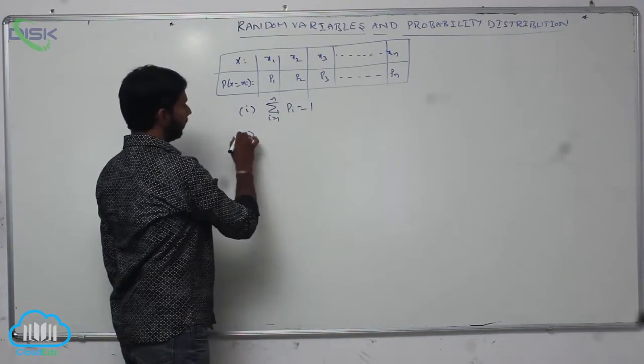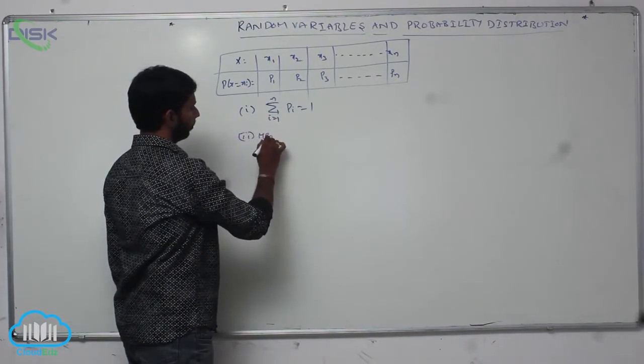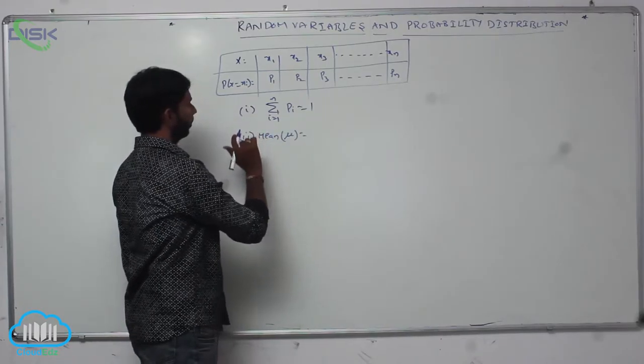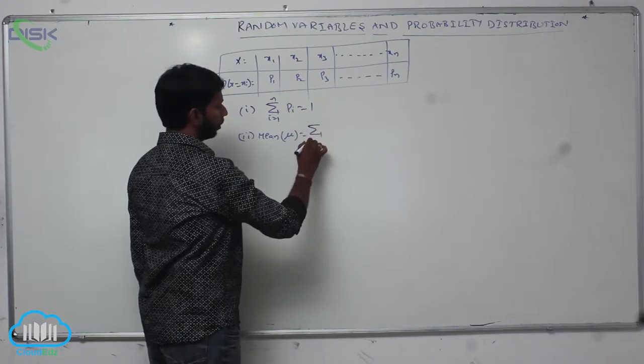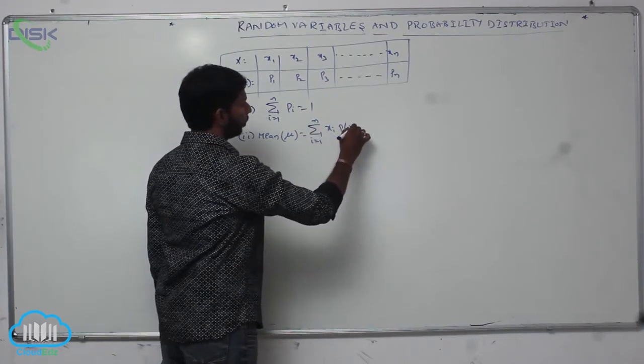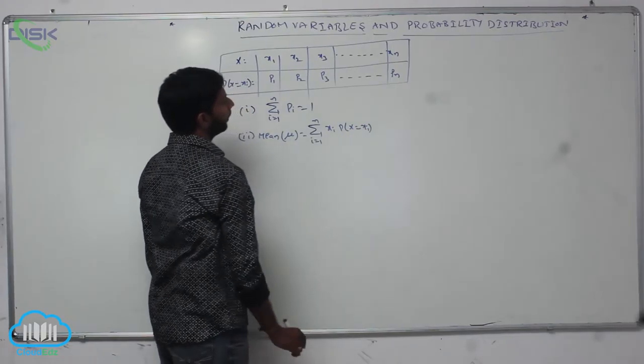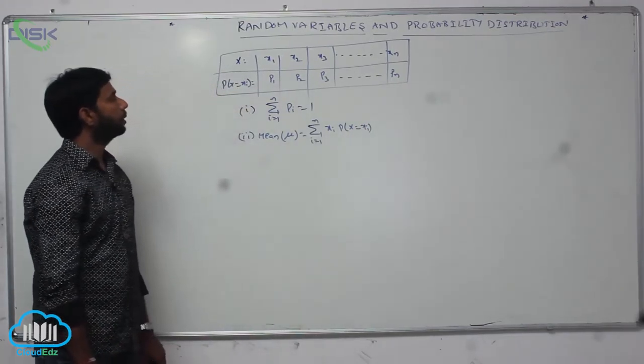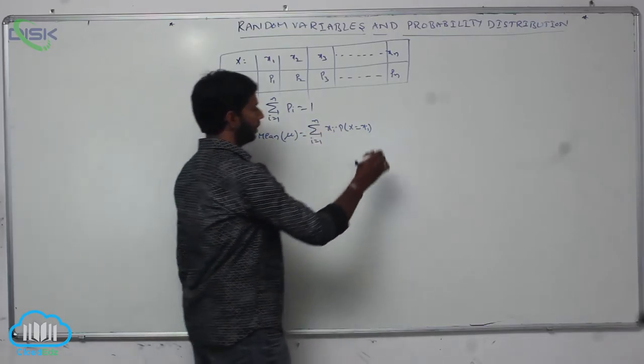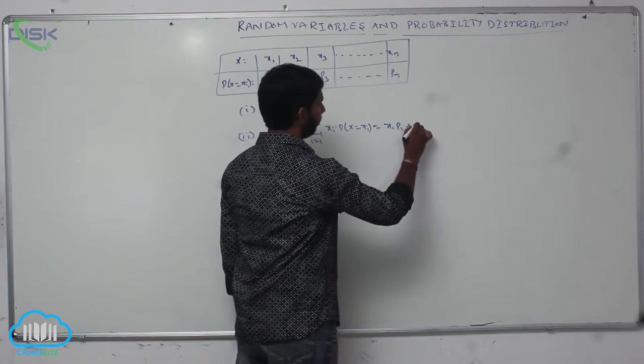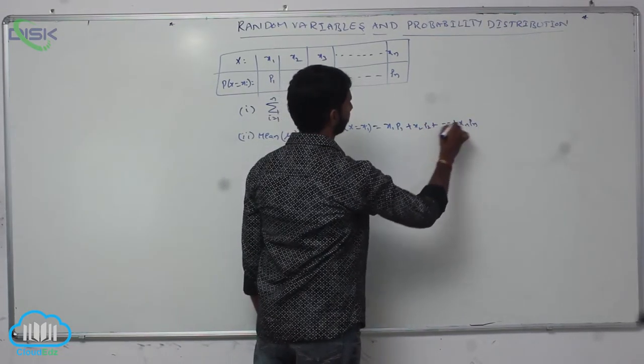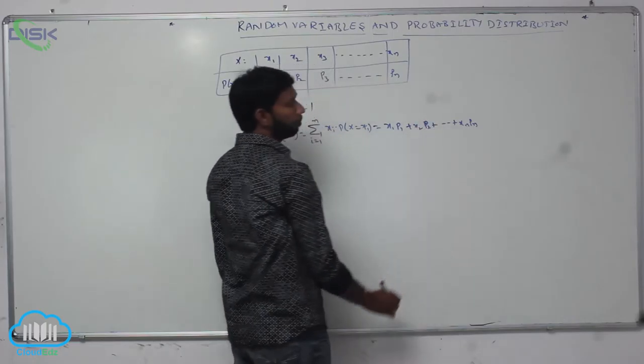Next one, mean. Mean mu is equal to sigma over i equals 1 to n, X1 P1 plus X2 P2 plus and so on Xn Pn.